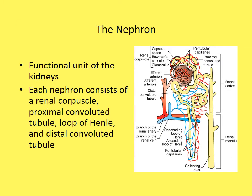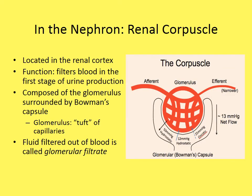Each nephron consists of a renal corpuscle, a proximal convoluted tubule, a loop of Henle, and a distal convoluted tubule. The renal corpuscle is located in the renal cortex — that outer layer — and its function is to filter blood in the first stages of urine production.